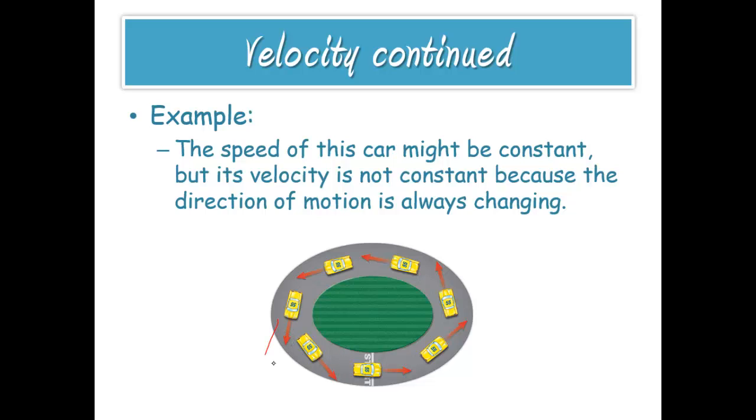Because look at these arrows. At one point they're going in this direction, one point they're going in this direction, so notice the direction in which they're pointing is always changing. So that means that their velocity would always be changing. So speed would be constant but velocity would be changing.